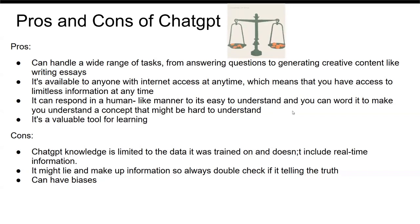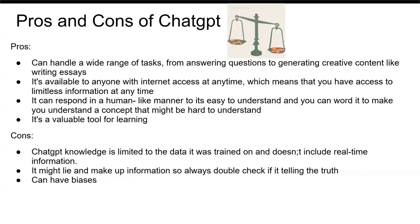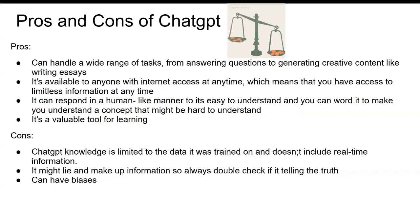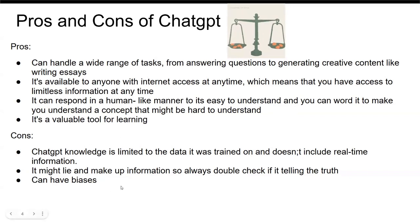The cons: ChatGPT's knowledge is limited to the data it was trained on and doesn't include real-time information. It might make up information, so always double-check if it's telling the truth. It can also have biases.